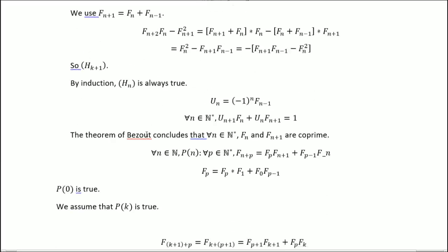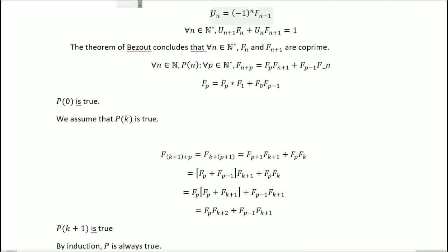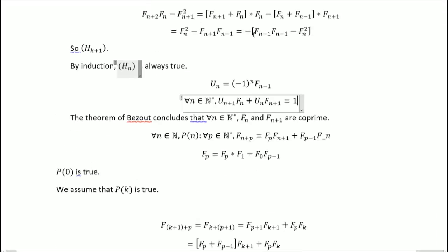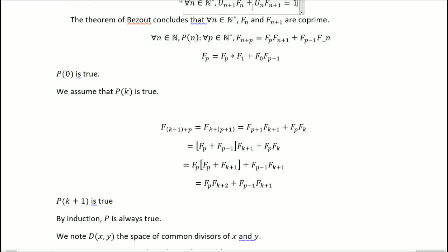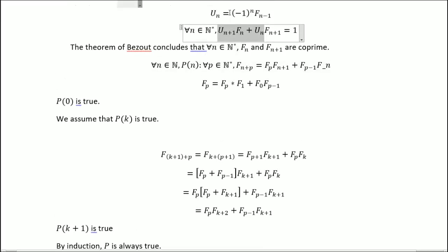So now we call u_n to be equal to (-1)^n times F_{n-1}. We get this equality by using the previous result. The theorem of Bezout concludes that F_n and F_{n+1} are coprime due to this.